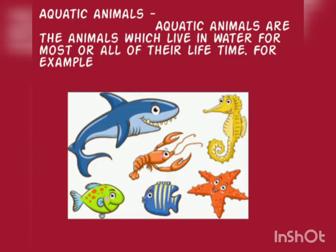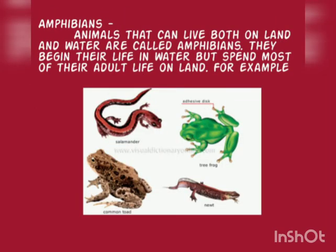Aquatic animals are the animals which live in water for most or all of their lifetime. For example, shark, starfish, crabs, fish, etc. Animals that can live both on land and water are called amphibians. They begin their life in water but spend most of their adult life on land. For example, frog, toad, salamander, etc.